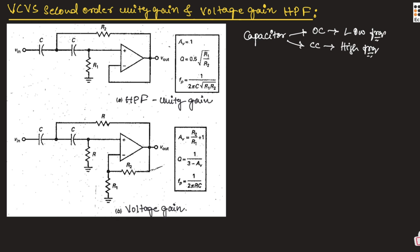For a unity gain circuit, both capacitors will have the same value but both resistors will have different values. The quality factor Q is equal to 0.5 times the square root of R1 divided by R2. The gain AV is equal to 1. The pole frequency is equal to 1 divided by 2π C times the square root of R1 times R2, for a high pass unity gain filter.